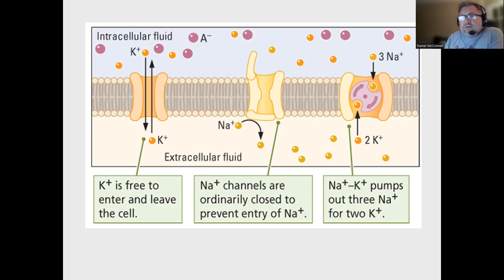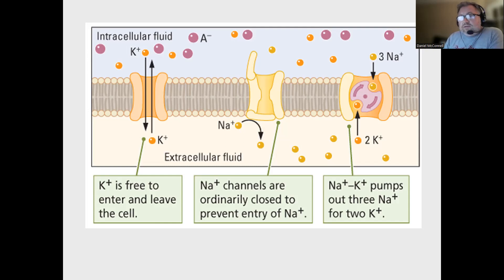The sodium-potassium pump is a very important mechanism that the neuron uses to maintain its resting potential. It doesn't just happen automatically and stay at negative 70 millivolts — the neuron requires this pump to keep working. This is an important metabolic function of neurons. The function of the sodium-potassium pump requires a lot of energy. This is why astrocytes pull nutrients from the bloodstream to provide nutrients for neurons — a lot of the energy consumption of neurons comes from the sodium-potassium pump continuously driving this negative 70 millivolt state.